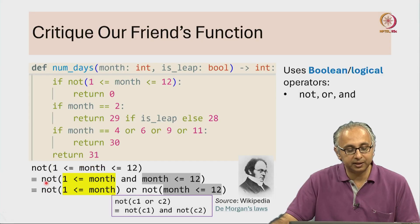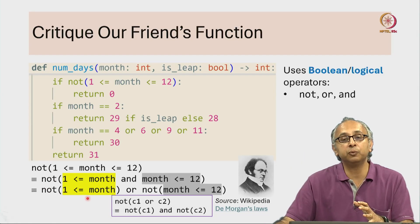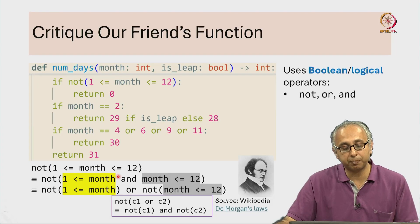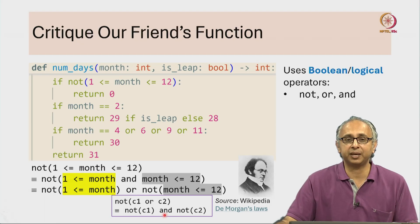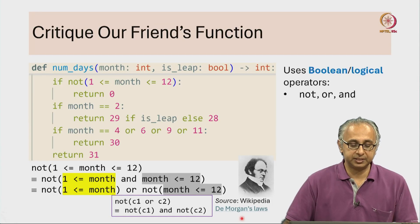So basically earlier we had the not on the outside and we are pushing the not inwards. When you do that you have to replace ands with ors and you have to replace ors with ands. This may be something that you have already seen; if not go read up about De Morgan's laws. Now how does this help us?